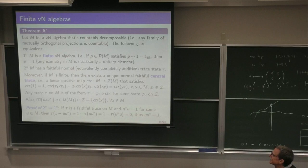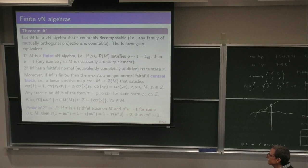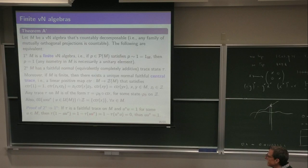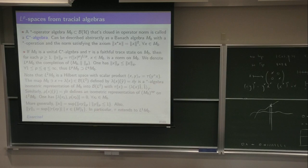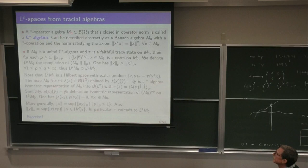Since I missed to prove one implication in the factorial case, let's do it in this generality — it's completely trivial. If you have a faithful trace and u*u = 1 for some element u in M, then 1 − uu* — which you'd like to be zero — has trace 1 minus trace(uu*). But the trace doesn't distinguish order: trace(uu*) = trace(u*u) = trace(1) = 1, so trace(1 − uu*) = 0. By faithfulness, uu* = 1. So having a faithful trace implies finiteness.